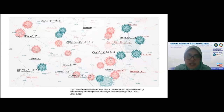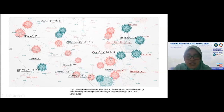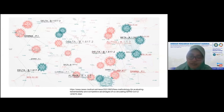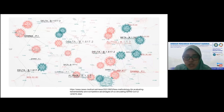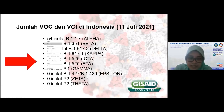VOC ini yang menjadi perhatian seluruh peneliti dunia. VOC atau varian of concern yang ada selama ini adalah alpha. Virus dari Wuhan biasa kita menyebutnya wild type. Wild type itu virus asli yang pertama kali muncul, yaitu di China. Kemudian ada varian pertama yang bermutasi. Bermutasi pertama kali ditemukan di UK, lalu diberi nama alpha. Kalau misalnya baca berita atau baca jurnal yang menyebut varian alpha, nah ini yang varian alpha.